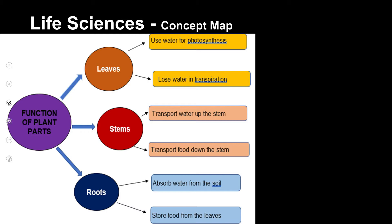We are looking at plants. In the last lesson, we looked at the structure of leaves, stems, and roots. What we are doing this time is looking at their function — what do they actually do? And most of it is to do with water. We're going to start with leaves, which use water for photosynthesis, and they lose water. Those two topics are what we're covering in this lesson.